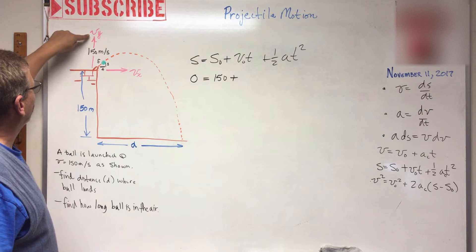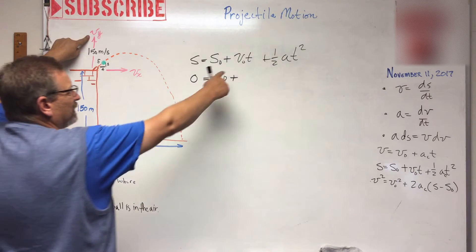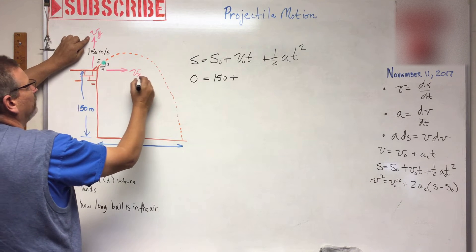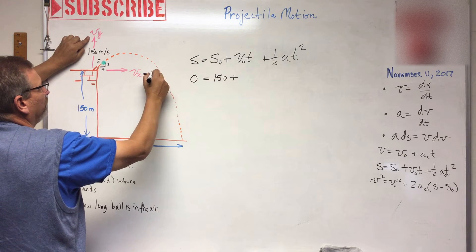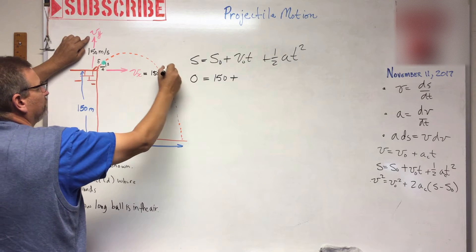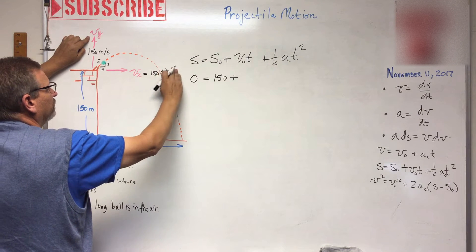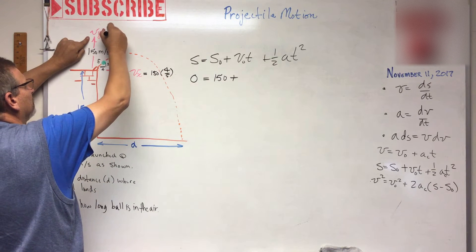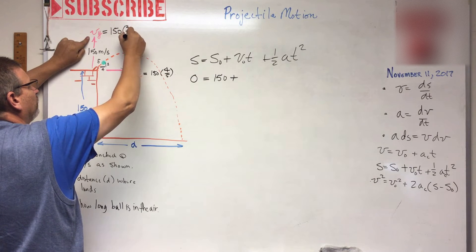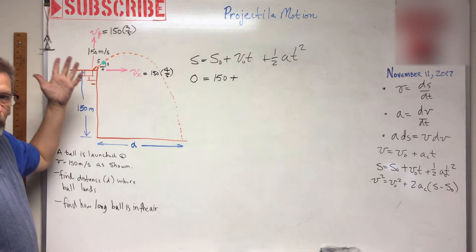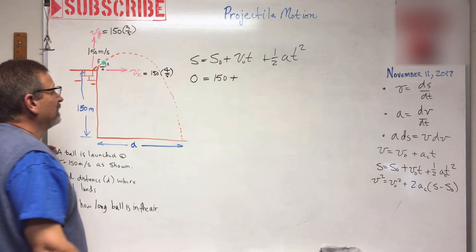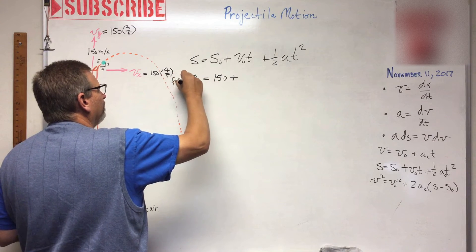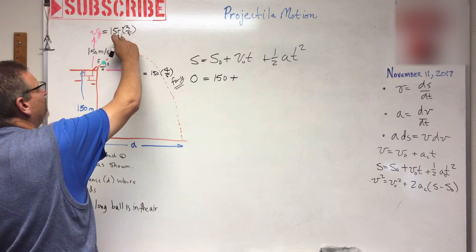So we're going to use this right here. The initial velocity was 150, but what is this component? Well, this one over here is, if you remember, 150 times 4 over 5. This one up here is 150 times 3 over 5. You remember how to break a force into components? We should be getting good at that by now, right? So in the y direction, this whole equation here in the y, the initial velocity is 150 times 3 over 5 times t.